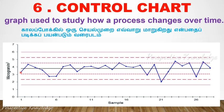Using the control chart, we can easily identify whether process values fall below the mean or go out of specification. If values are consistently lower, we can detect that from the graph and use the control chart to take corrective action.